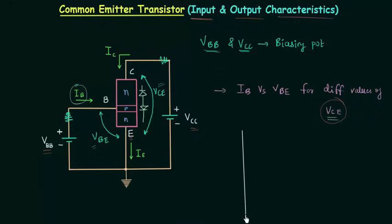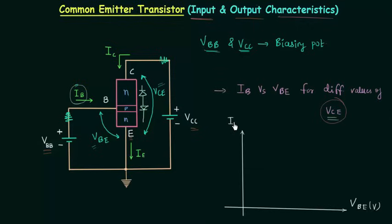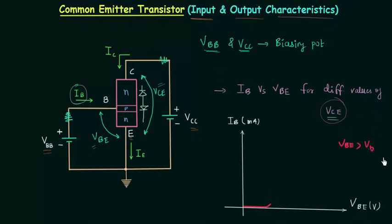I will draw the forward bias characteristics of the PN junction diode. The x-axis is for VBE in volts and the y-axis is for IB, the input current, in milliamps. Initially the current is zero. When VBE is very small, current starts to increase with VBE. And once VBE is greater than the barrier potential, there is an exponential rise in the current. So this is the forward bias characteristics of the PN junction diode.